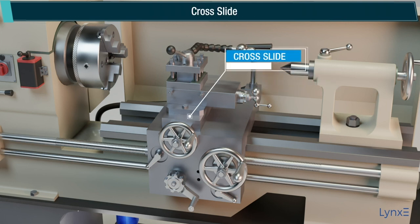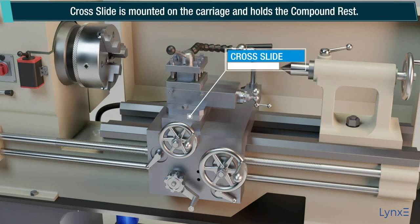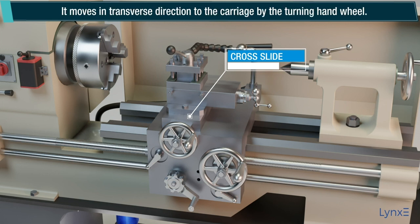Cross Slide: The cross slide is mounted on the carriage and holds the compound rest. It moves in a transverse direction to the carriage by the turning hand wheel.